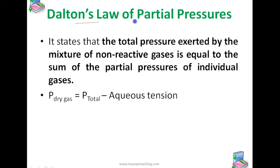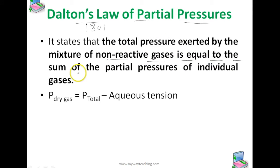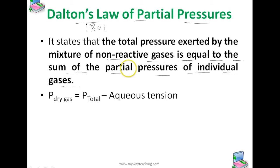The next topic is Dalton's Law of Partial Pressures. This law was formulated by John Dalton in 1801. It states that the total pressure exerted by a mixture of non-reactive gases is equal to the sum of the partial pressures of individual gases — meaning the pressure each gas would exert if enclosed separately in the same volume under the same temperature conditions.